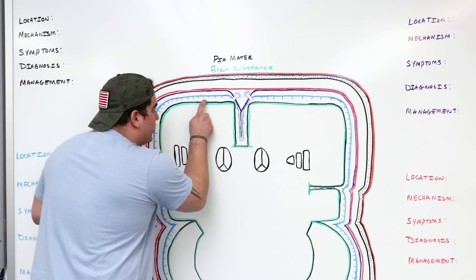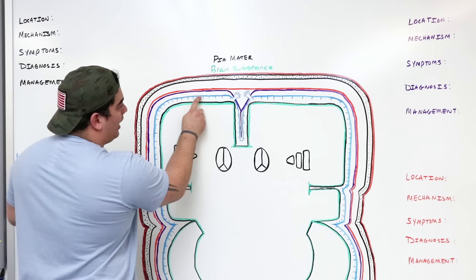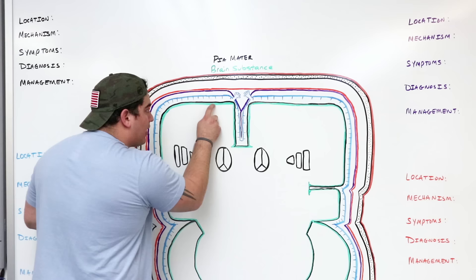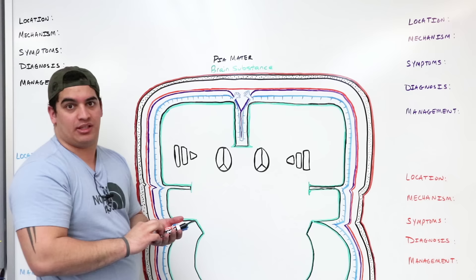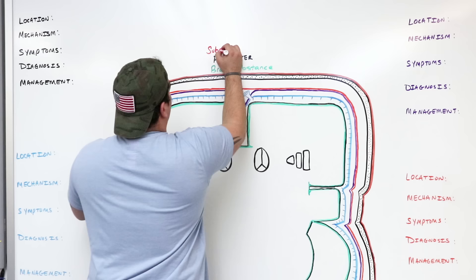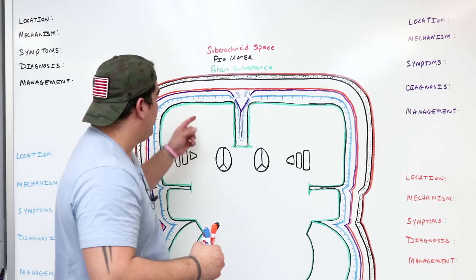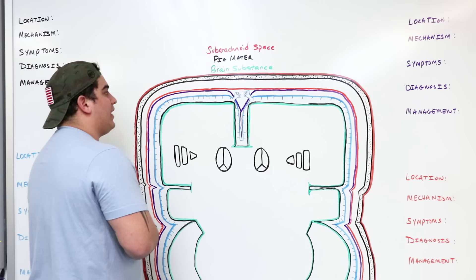After the pia mater, there's a space between it and the next layer — the blue tissue called the arachnoid mater. That space right there is called the subarachnoid space. When we cover cerebrospinal fluid flow, you'll see that cerebrospinal fluid is moving inside the subarachnoid space.